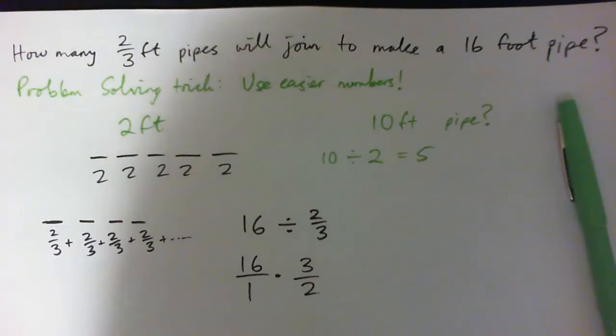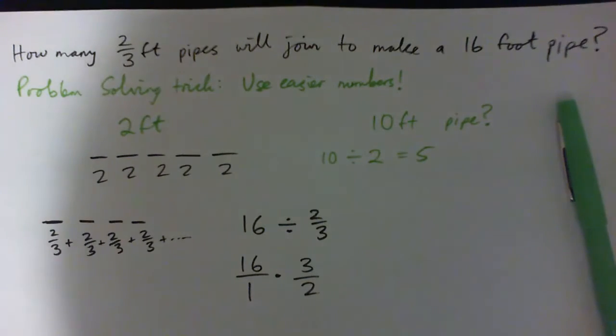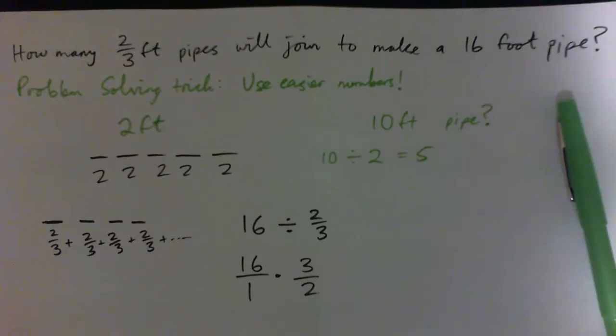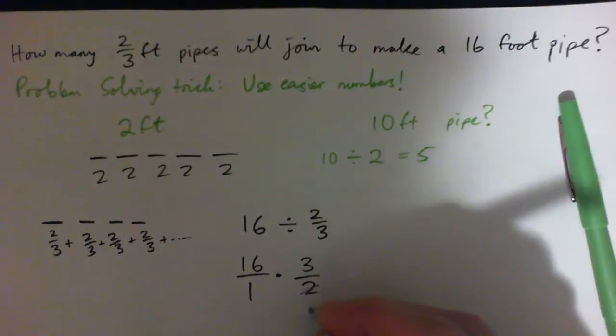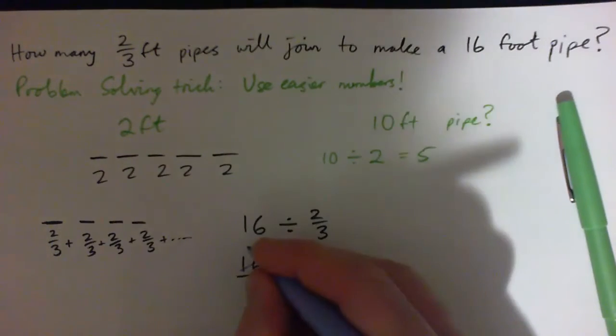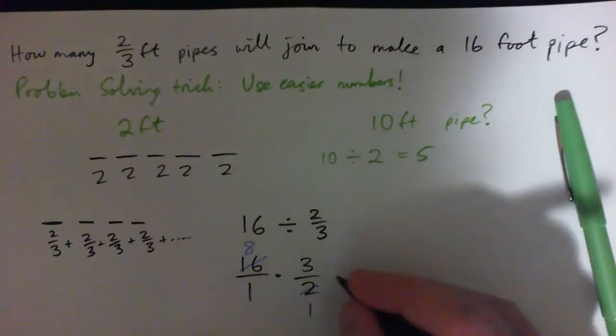So then just do the operation: multiply by the reciprocal. Instead of going 3 times 16 is 48 and 48 over 2 is 24, it's easier to do this: 2 into 2 goes once, 2 into 16 goes 8 times.